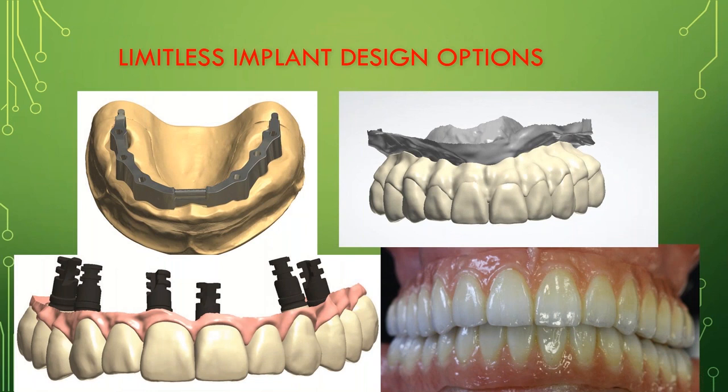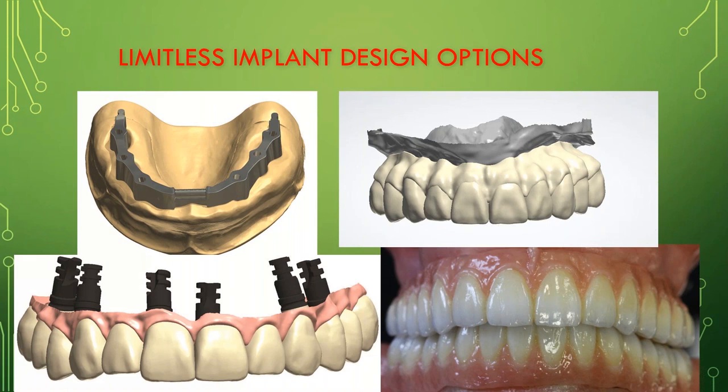Once you start from the surgical guide portion of things, you in essence own that case — the restorative end as well — because you've already seen it from A to Z, visualized and planned it all the way through. The final approval must always be signed off by a licensed dentist. With that, implant designs and options are limitless: bars, hybrids, high-impact polymer with individual crowns. You can get into this by starting with digital dentures first, which you would need for healing and conversions.